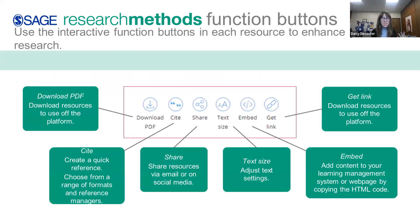Within each of these different content types, SAGE Research Methods has function buttons that will help you utilize the resources. Everything has a downloadable PDF — even the videos have a fully accessible and captioned PDF transcript that you can download. Similarly, the case studies, the data sets, and the books can all be downloaded as PDFs, or chapters can be downloaded as PDFs. There's a citation tool in case you want to cite any content, and you can choose from a range of formats and citation styles and export to reference managers like Zotero.